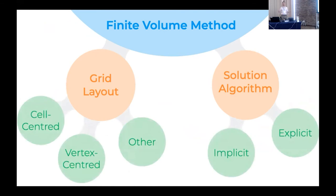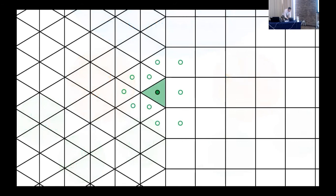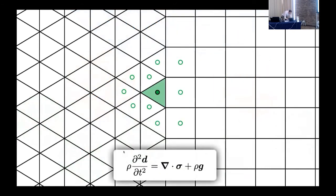Two key ingredients when formulating a finite volume method are the grid layout and the solution algorithm. Grid layout means where you store the primary variables — velocity, pressure, or displacement — whether cell-centered, vertex-centered, face-centered, staggered, etc. Solution algorithms are broadly broken into implicit and explicit — whether you solve a matrix or not — and implicit can be further broken into segregated versus block-coupled versus hybrid combinations. Taking Lagrangian solid mechanics, the conservation of linear momentum has mass times acceleration on the left and surface and volume forces on the right.